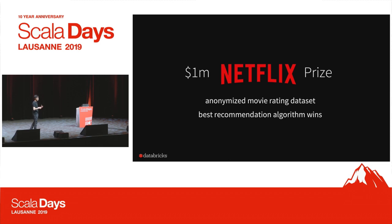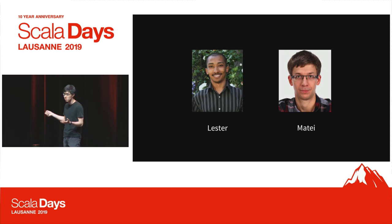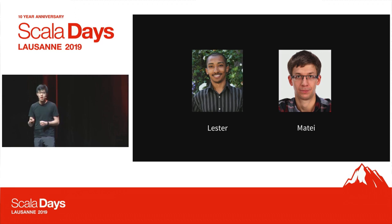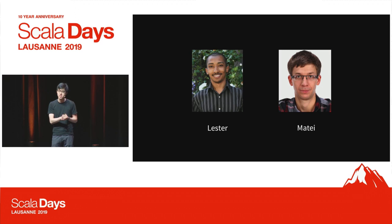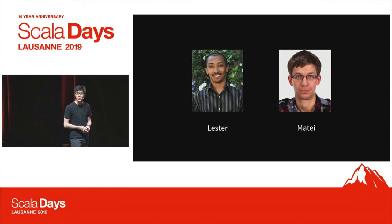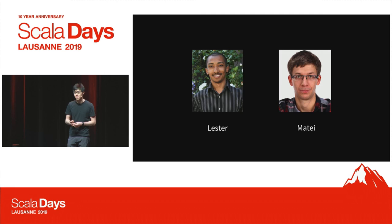He needed some solution to actually scale out and process all of those user rating data. He looked around, and there weren't a lot of good solutions back then. They either worked well on a single node but not in a distributed setting, or they worked in a distributed setting but were very inefficient — the iteration time was very slow. So Lester talked to Matei Zaharia, who many of you know as the original creator of Spark. Matei first tried Ruby and then decided to use a more proper language — he picked up Scala. Spark was actually one of the first projects Matei used Scala for.